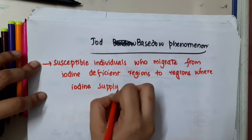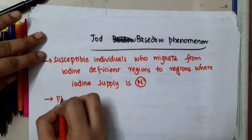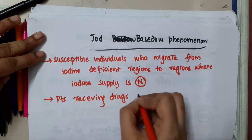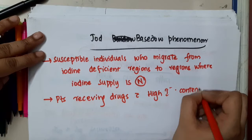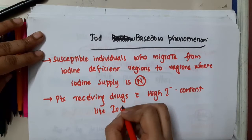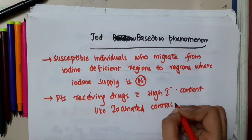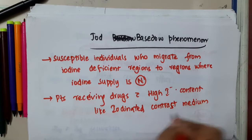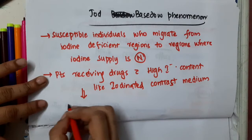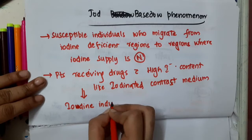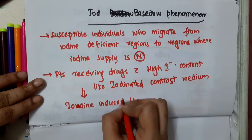It is also seen in individuals or patients who are receiving drugs with high iodine content, like iodinated contrast medium. In all these conditions, there is high iodine content, and this iodine — which is in high concentration — induces hyperthyroidism. So, iodine-induced hyperthyroidism is called Jod-Beyesdow's effect.